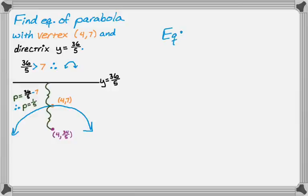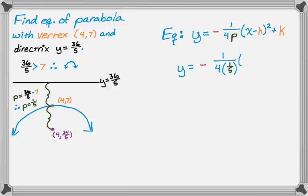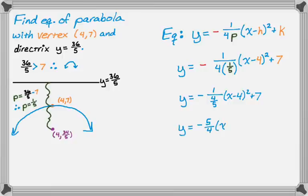The equation in general is negative 1 over 4p quantity x minus h squared plus k. I know (h, k) is (4, 7) and p is 1 fifth, so I'm going to plug in what I know. But no one in their right mind would leave 1 over 4 fifths, so I'm going to simplify that to get negative 5 fourths, quantity x minus 4 squared plus 7. That's the equation of this parabola.